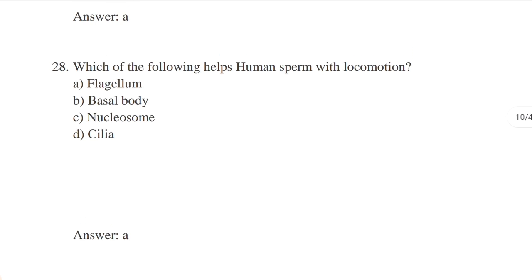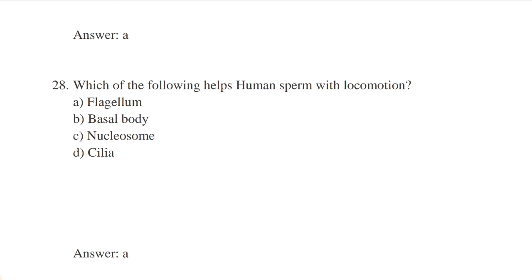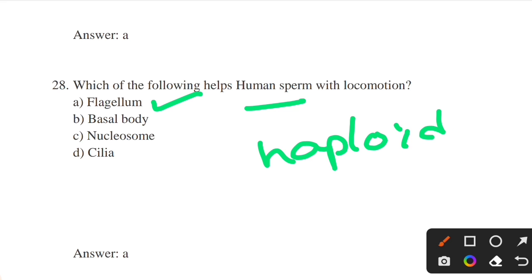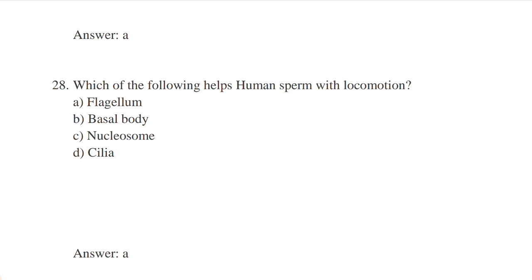Which structure helps human sperm with locomotion? Options: flagellum, basal body, nucleosome, cilia. Answer: option A — flagellum. Human sperm is haploid and moves with the help of a flagellum, which is found in the tail region of the sperm.